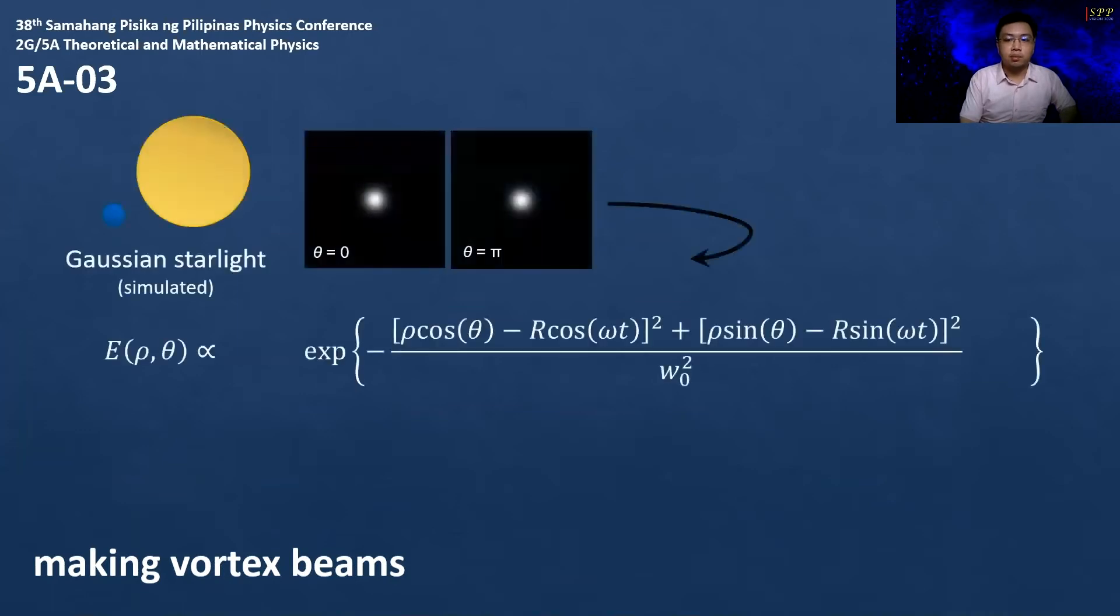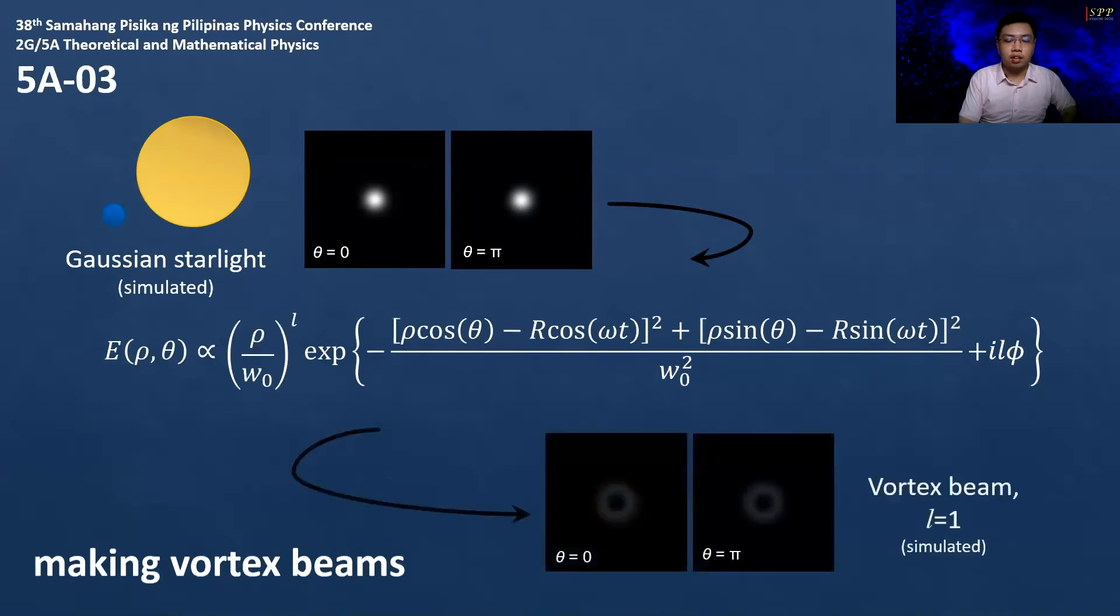From our view, stars with transversely orbiting exoplanets will wobble about their barycenter in a transverse motion as well. In our work, we simulated starlight in this case as an off-centered Gaussian beam rotating about the center. The electric field equation is then modified to accommodate a charge L, turning it into an optical vortex.